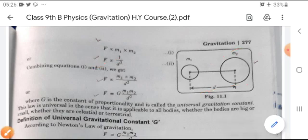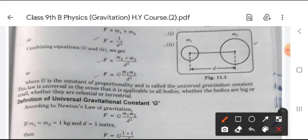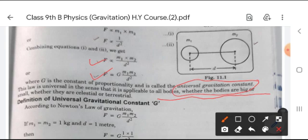Combining the equations, we get F is directly proportional to m1 m2 and inversely proportional to d square. After introducing the equality sign, we also introduce a constant that is capital G. Capital G is called the proportionality constant or the universal gravitation constant. This law is universal in the sense that it is applicable to all bodies, whether the bodies are big or small, whether they are celestial or terrestrial.